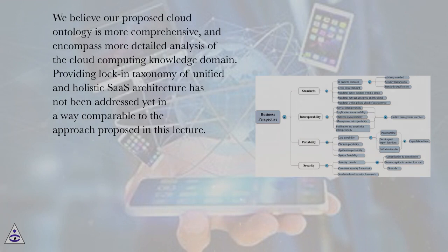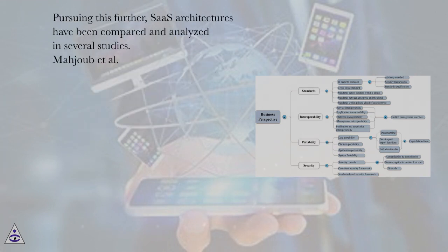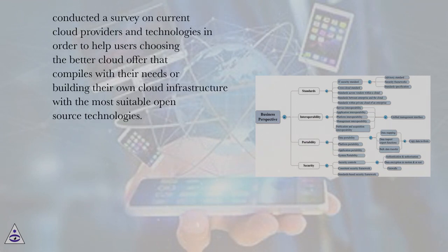Their main objective is to classify commercial cloud offerings in order to analyze cloud computing market opportunities. As such, they do not address the specific lock-in potentials or limitations of the several cloud layers, nor the research opportunities associated with each cloud layer. We believe our proposed cloud ontology is more comprehensive and encompasses a more detailed analysis of the cloud computing knowledge domain. Providing a lock-in taxonomy of a unified and holistic SaaS architecture has not been addressed yet in a way comparable to the approach proposed in this lecture. Pursuing this further, SaaS architectures have been compared and analyzed in several studies. Majoub et al. conducted a survey on current cloud providers and technologies in order to help users choose the better cloud offering that compiles with their needs or to build their own cloud infrastructure with the most suitable open-source technologies.